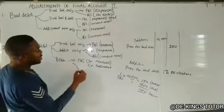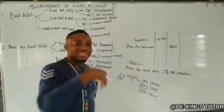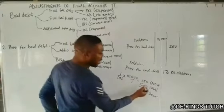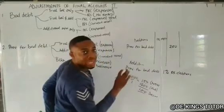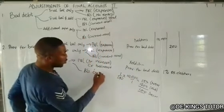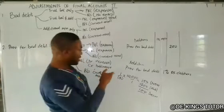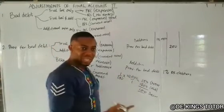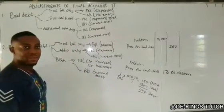In the balance sheet, what we post is the recent amount we just calculated — not the difference. For instance, we calculated 100, so 100 is what goes to the balance sheet. It goes under current assets to reduce the debtors figure. Not the difference as was posted to profit or loss, but the actual amount recently calculated.